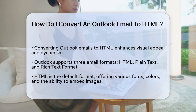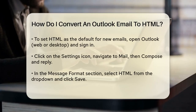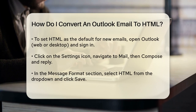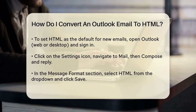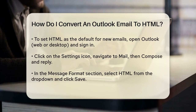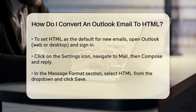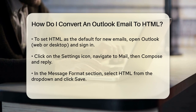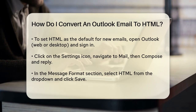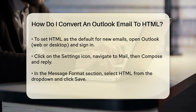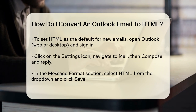To change the format of all your new emails to HTML, start by opening Outlook. If you're using the web version, go to outlook.live.com or open the Outlook desktop application and sign in to your account. Once you're in, click on the Settings icon at the top menu. This will open a pop-up window where you need to go to Mail and then select Compose and Reply. Here, you'll find the Message Format setting. Simply select HTML from the drop-down menu in the Compose Messages in this format section, and then click Save.